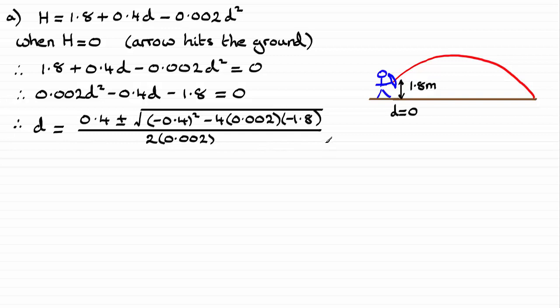Solving this, if we take the positive value you'll get 204.403, and the negative value gives us minus 4.403. Well clearly it can't be the negative value because we're told that d is greater than or equal to zero. So if we round that to three significant figures, it's going to be 204 meters.